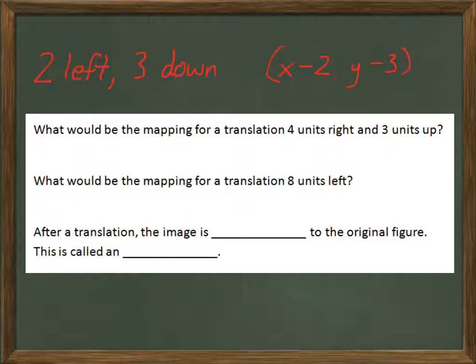So to move four units right, to the right is positive in the X direction. So whereas two left subtracted from the X coordinate, four units right would add to the X coordinate. So I would take all the X's and add four. Three units up, well up is positive in the Y direction. So I would say that this would be Y plus three. And I would be right. So a mapping for a translation to the right and up is adding to the coordinates.